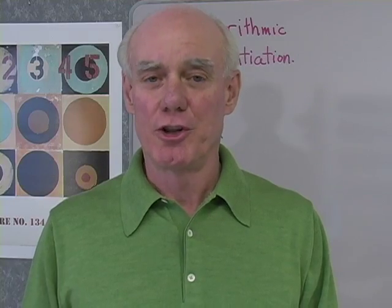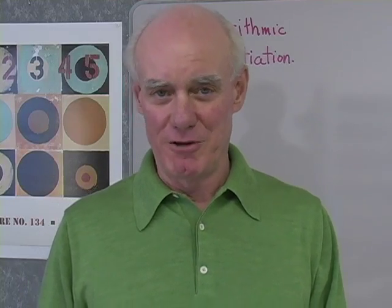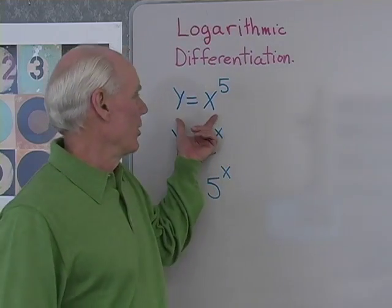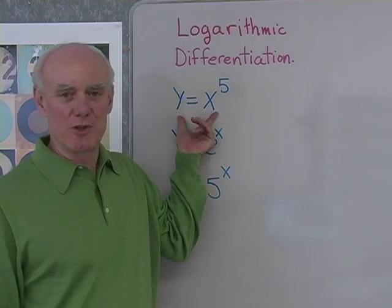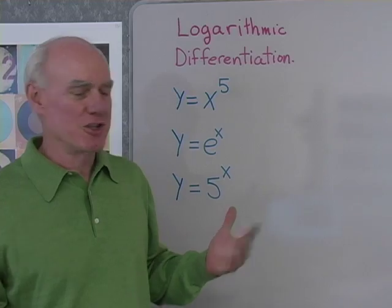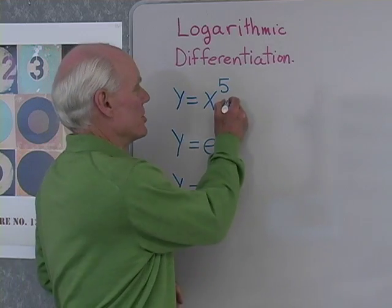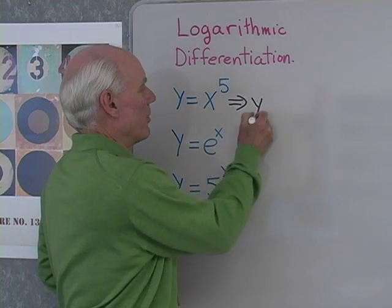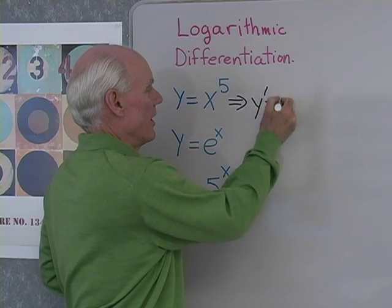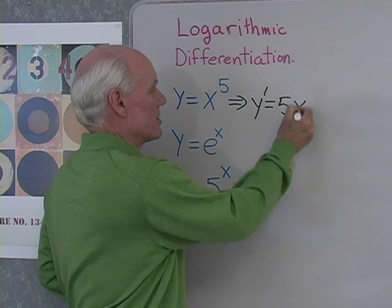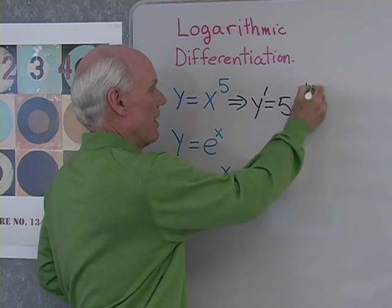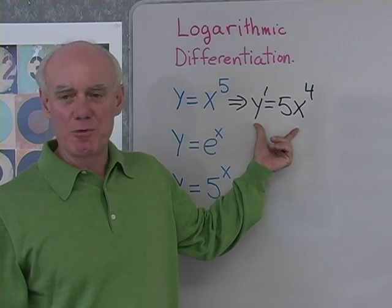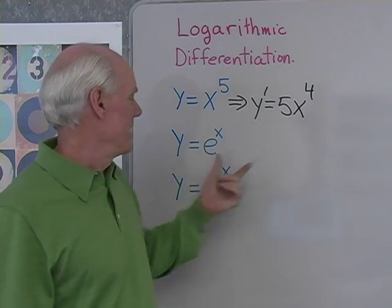Next, we want to do what's called logarithmic differentiation. Over here on the board, I've written y equals x to the fifth. Well, I know how to differentiate that — that's pretty simple. y prime is equal to that exponent, same base, power one less. So I know that rule for differentiation; it's easy.